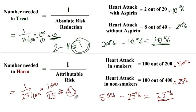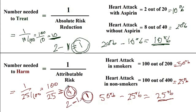Let's verify: if four patients smoke, 50% of 4 equals 2 will develop a heart attack. If they do not smoke, 25% of 4 equals 1 will develop a heart attack. So 2 minus 1 equals 1 — one additional patient develops a heart attack. This mirrors the NNT concept: if 10 patients were treated with aspirin, there was one less patient with a heart attack. That concludes our discussion.